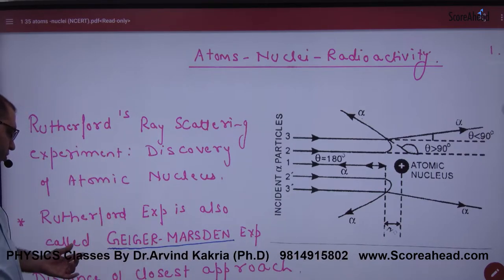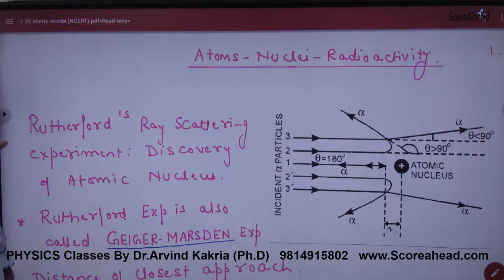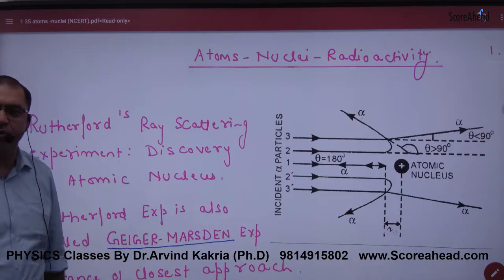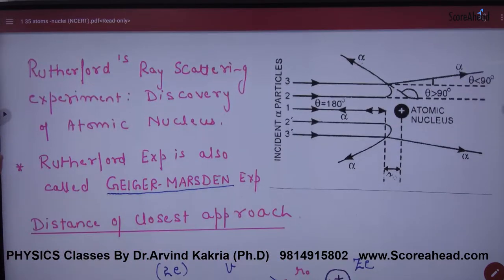So what is the second name of the Rutherford experiment? Geiger-Marsden experiment. In CBSE, Rutherford's Geiger-Marsden experiment is mentioned. So many people are confused that we haven't done this topic. So let's mark this important. In this, the discovery of the nucleus.